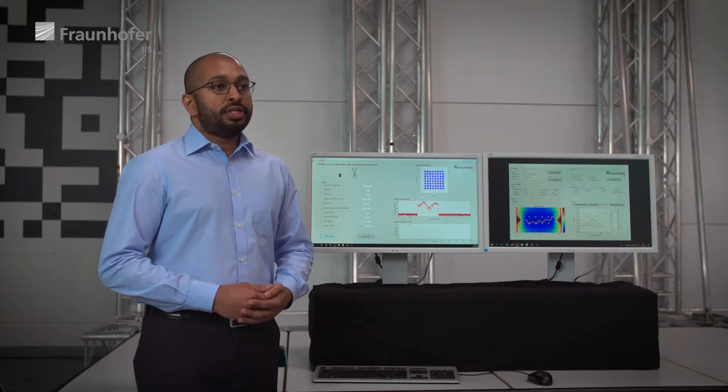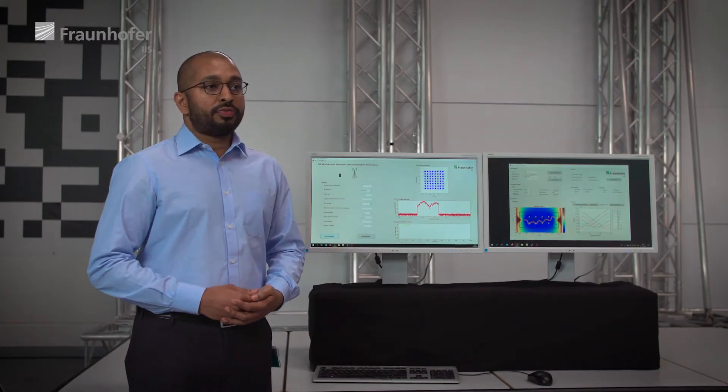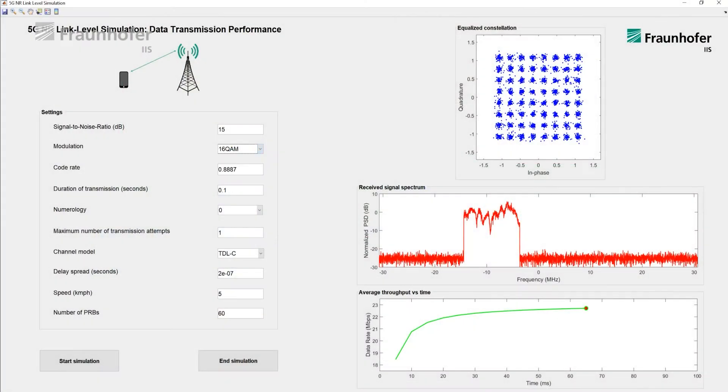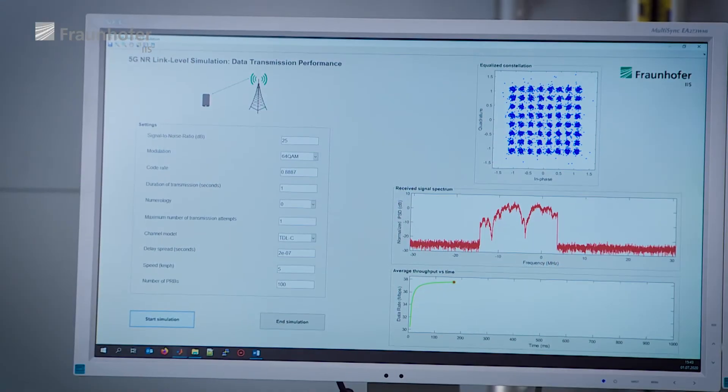We take a glance at our simulation platform through the visualization of two different simulation environments. On the first screen you see a link level evaluation of the communication performance between a base station and a cell phone, where the data rate experienced under given wireless propagation conditions is displayed.